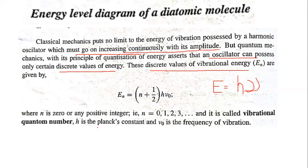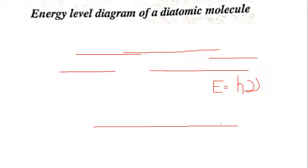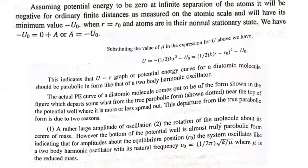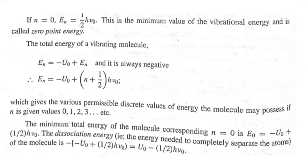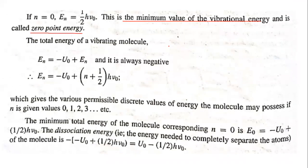These discrete energy values are given by E equals (n plus half) times h·ν₀. The minimum energy, corresponding to n equal to zero, is half of h·ν₀. This is called the zero-point energy.